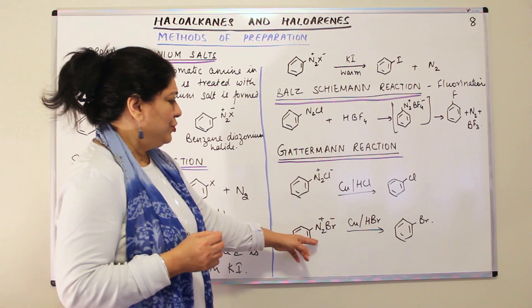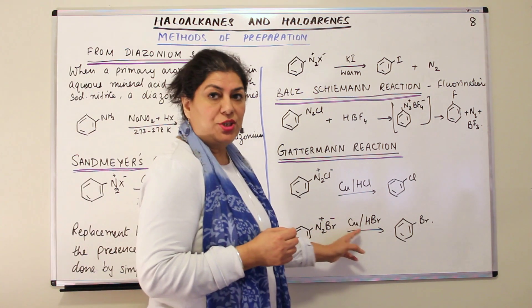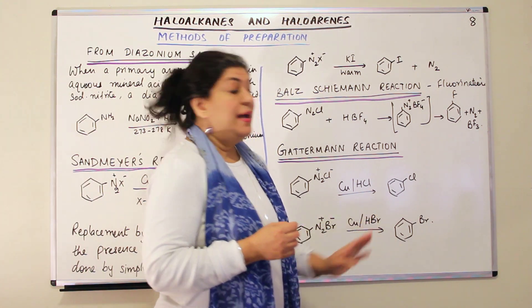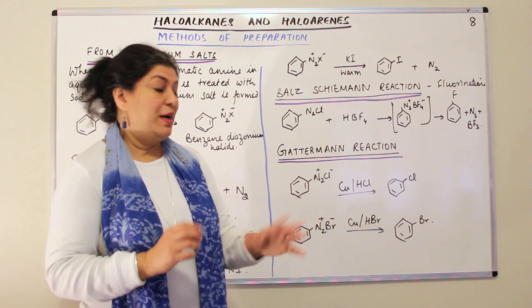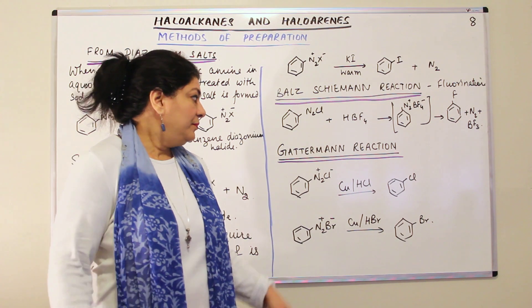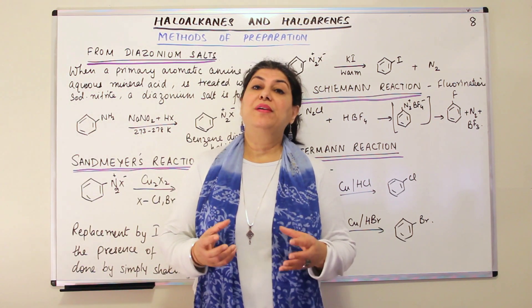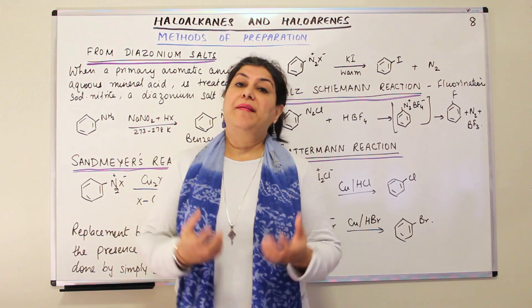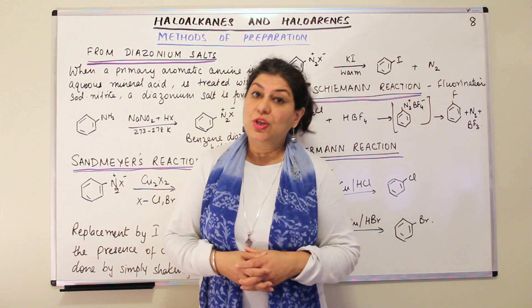And if you use N2Br, and you carry the reaction out in the presence of copper, and the acid that you use has the same ion that is HBr, you get the bromo product.